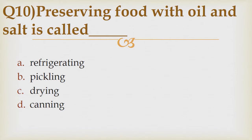Question number 10. Preserving food with oil and salt is called ___. Option A: Refrigerating. Option B: Pickling. Option C: Drying. Option D: Canning. The correct answer is Option B — Pickling.